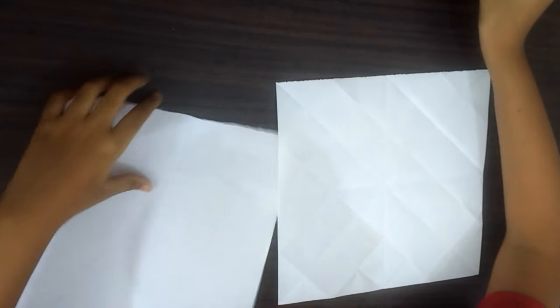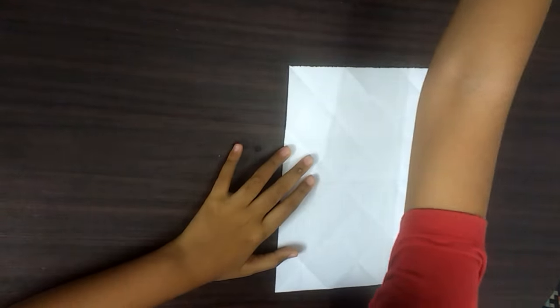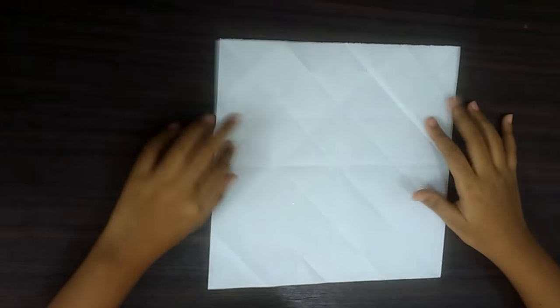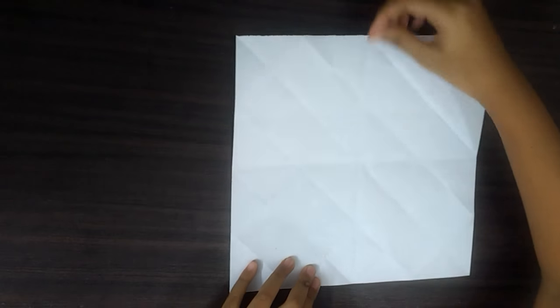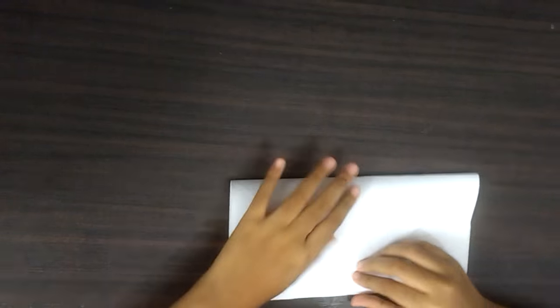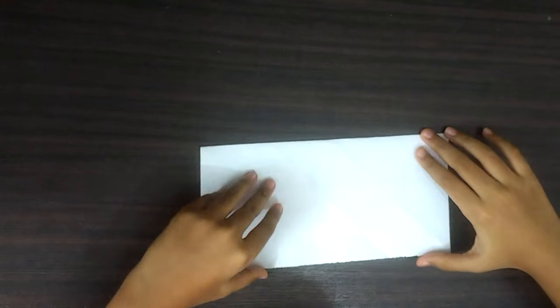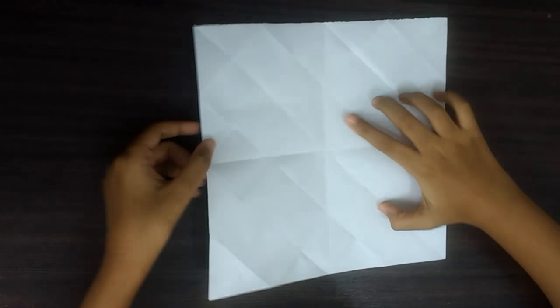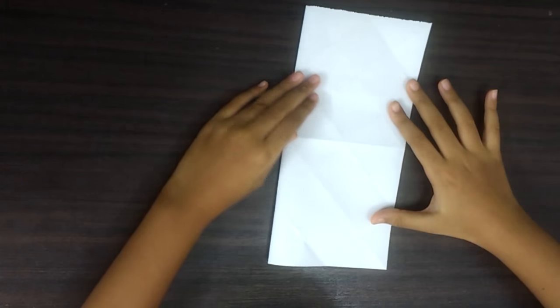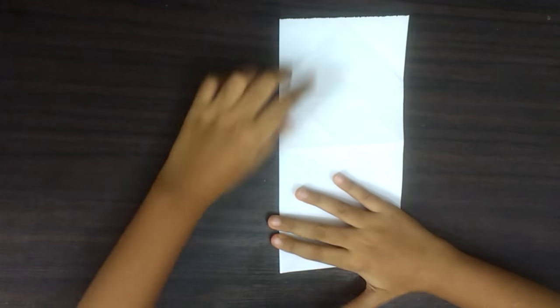We will start with the bigger paper. We are going to use it to make the lid. First, we will fold one side downwards to make a rectangle. Open it, fold another side sideways to make another rectangle.